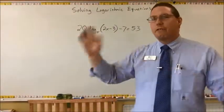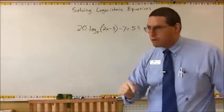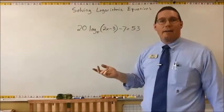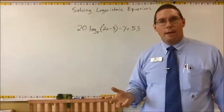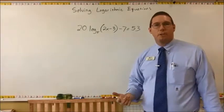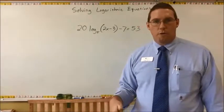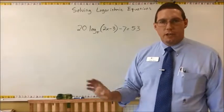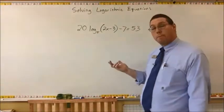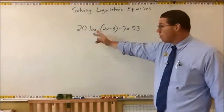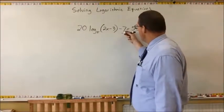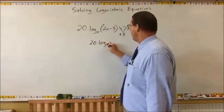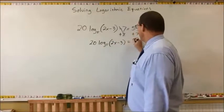I recommend canceling addition and subtraction first, then multiplication and division, then handle exponents and logarithms — basically the order of operations backwards. So let's add 7 to both sides to cancel the minus 7. Now we have 20·log base 5 of (2x minus 3) is equal to 60. Then we divide by 20 on both sides to get rid of that 20. Now we have log base 5 of (2x minus 3) is equal to 60 divided by 20, which is 3.